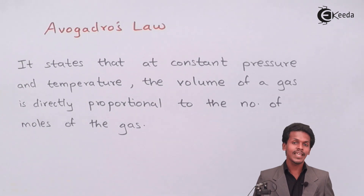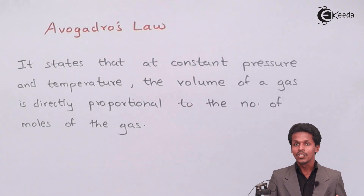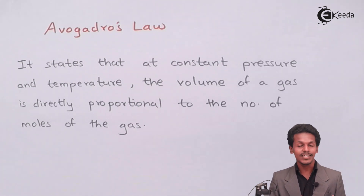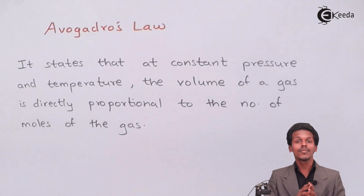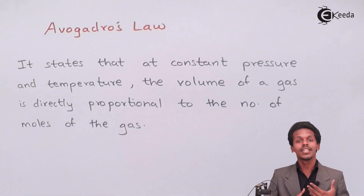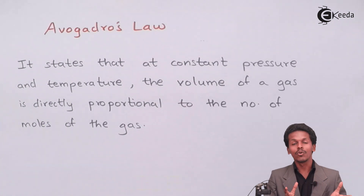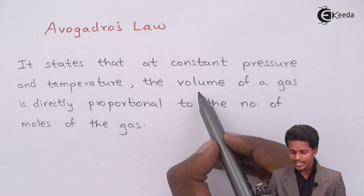In this case, pressure and temperature are both being kept constant. We could also understand it this way: if the number of moles of the gas increases, then the volume of that particular gas will also increase. If the volume of the gas is more, that means it has more number of particles, and it increases with the number of moles of the gaseous particles present in that gas.